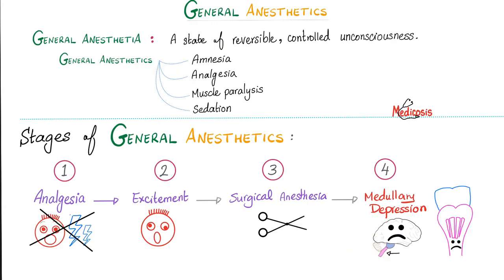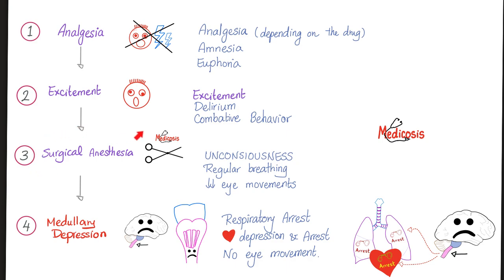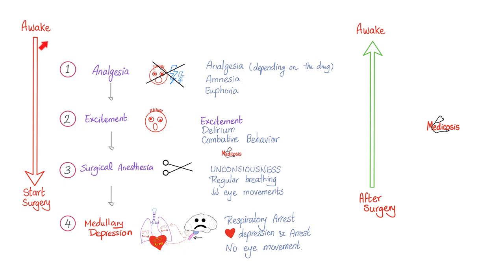Why do we give a general anesthetic? We want you unconscious — it is a state of reversible controlled unconsciousness. We want you to lose memory, lose pain sensation, and lose the ability to move your skeletal muscles. The sedated stages: first, no pain sensation; then excited to the point of delirium; then surgical anesthesia where the surgeon works; and if taken too far, medullary depression and coma. The difference between stage three and four is eye movements — decreased but present in stage three; no eye movements with respiratory arrest in stage four.